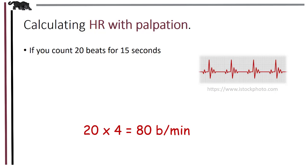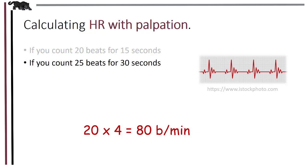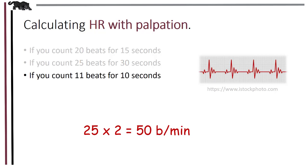If you count for 30 seconds, that's half a minute, so multiply the number of beats by two. For example, 25 beats times 2 equals 50 beats per minute. If you counted for 10 seconds — commonly used during exercise — since 10 seconds is a sixth of a minute, multiply by six. So 11 beats times 6 equals 66 beats per minute.